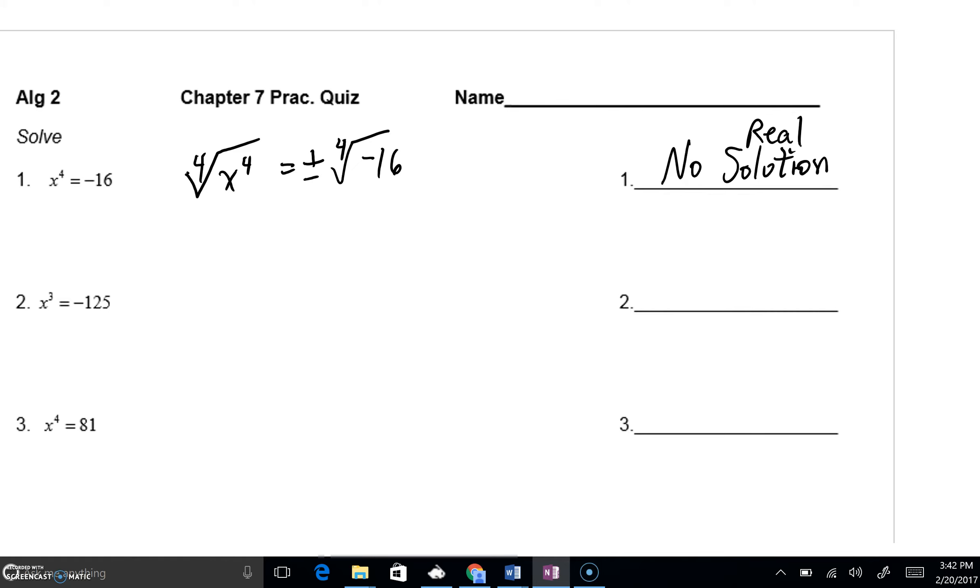For number 2, you're going to want to get rid of that third power. We're going to have to take a third root on both sides.